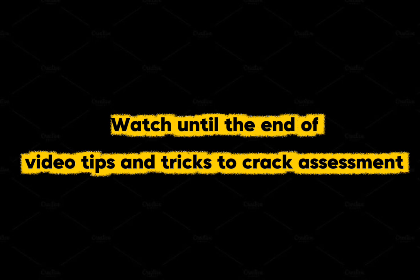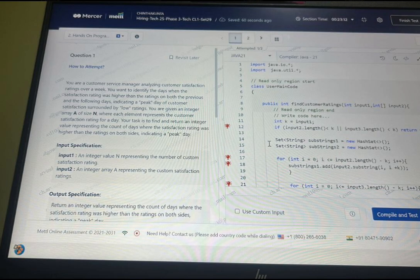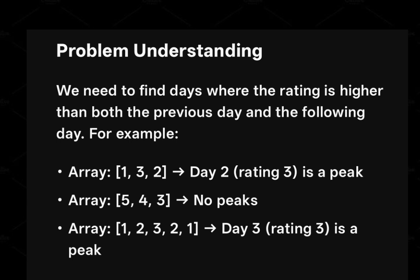Without wasting any time, let's get into this video. First, the questions will be based on arrays. For the first question, you need to find the rating that is higher than both the previous and next days. For example, the first array contains [1, 3, 2] — day one is rated 1, day two is rated 3, day three is rated 2, so day two is a peak. The second array [5, 4, 3] has no peak. The third array [1, 2, 3, 2, 1] has a peak at day three.